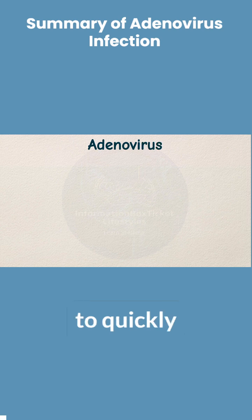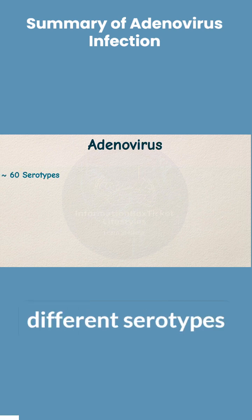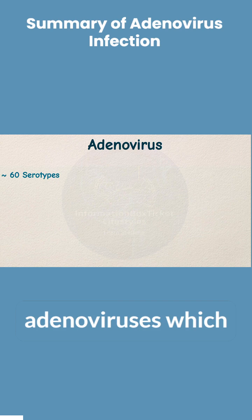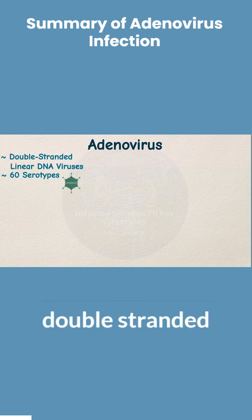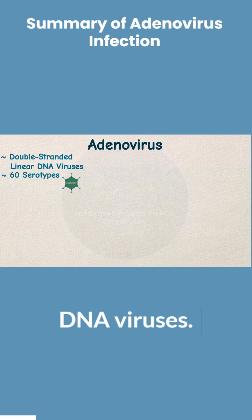To quickly review, there are over 60 different serotypes of adenoviruses, which are double-stranded linear DNA viruses.